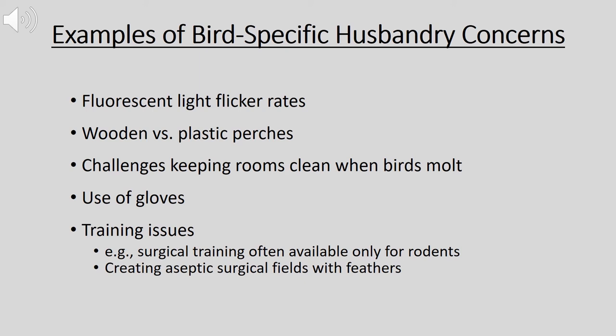Another example is that many facilities would prefer plastic perches for birds because they're easier to clean. However, experience has shown that wild birds housed with plastic perches end up with severe problems with their feet, so wooden perches are far better. A third example is the challenge of keeping rooms clean when birds molt — when they drop all their feathers and replace them, the feathers being shed all at once inside a room can create massive problems for cleaning staff.